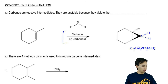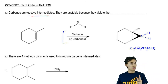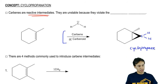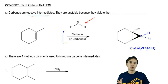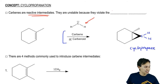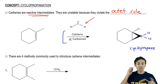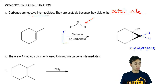If you recall, carbenes are reactive intermediates not because of their formal charge. This is an example of a carbene right here. Does it have a formal charge? No, it has a formal charge of zero. You might think this doesn't look reactive, but remember, it has a big problem: it violates the octet rule. Even though it doesn't have a formal charge, it wants to have eight octet electrons around it. Right now, it only has six.